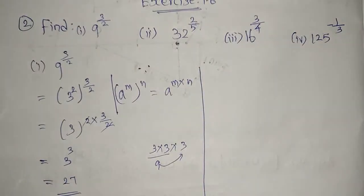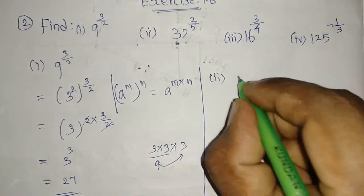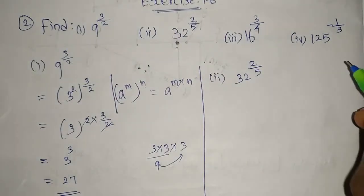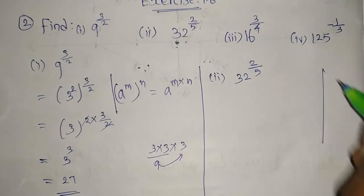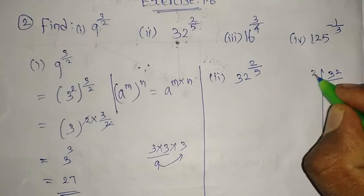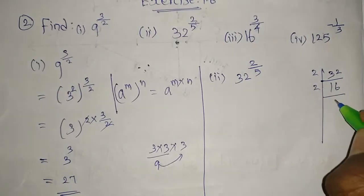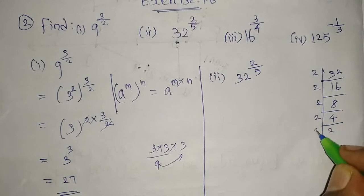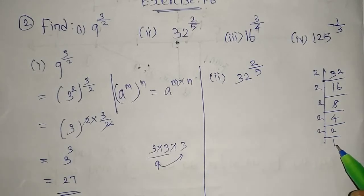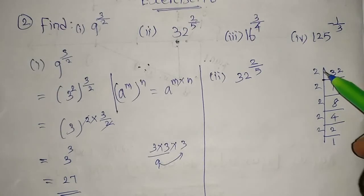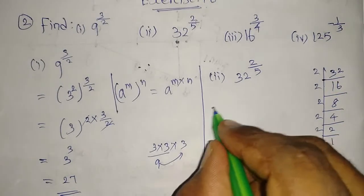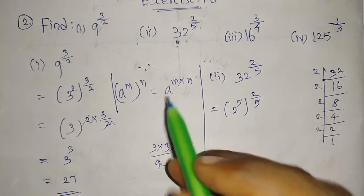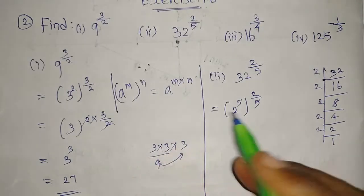Now for the second question: 32 whole power 2 by 5. Since 32 is not a perfect square, I am going to use prime factorization. In 32 we have 2 times 16, again 2 times 8, again 2 times 4, again 2 times 2, again 2 times 1 — we continue until we get 1. We have 1, 2, 3, 4, 5 twos, so 32 equals 2 power 5. It becomes 2 power 5 whole power 2 by 5.